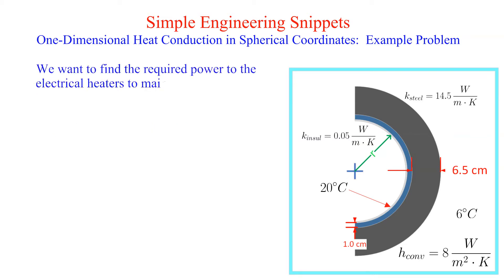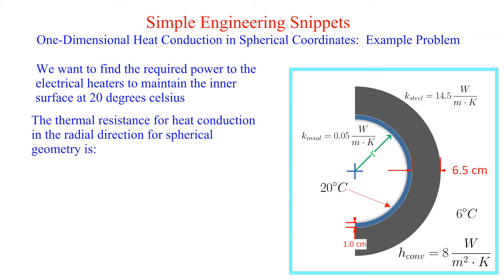We will be using a thermal circuit from the internal 20 degrees Celsius to the 6 degrees Celsius ocean temperature. There is conduction going through the insulation and the steel. The thermal resistance for radial heat conduction in spherical coordinates is provided for a single layer with internal radius R_i and outer radius R_o.